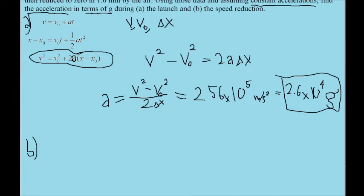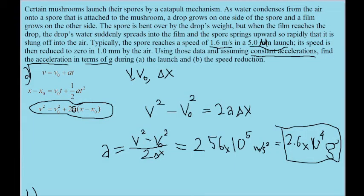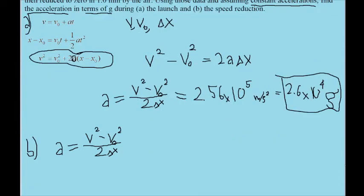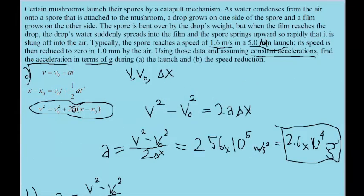Part b is pretty easy because it's basically the exact same process as part a, and we've already done most of the work for that. We'll take the same formula except now we're looking at a case where the spore is slowing down from an initial speed now of 1.6 meters per second to a final speed of 0. This means that 0 will be used in place of v, and this time it's the v0 term that will be replaced with 1.6 meters per second.